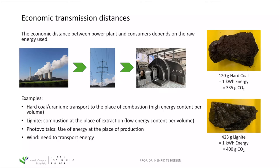Photovoltaic systems are mainly installed at the place of consumption — on roofs of buildings, for example — so the electricity is used right in the building as own consumption. There are also large PV systems that require transmitting power over long distances. Wind energy similarly requires energy transport; in Germany, high wind speeds are in the northern part while big industry is located in the south, so we need a distribution and transmission grid to connect wind energy generation to consumers.